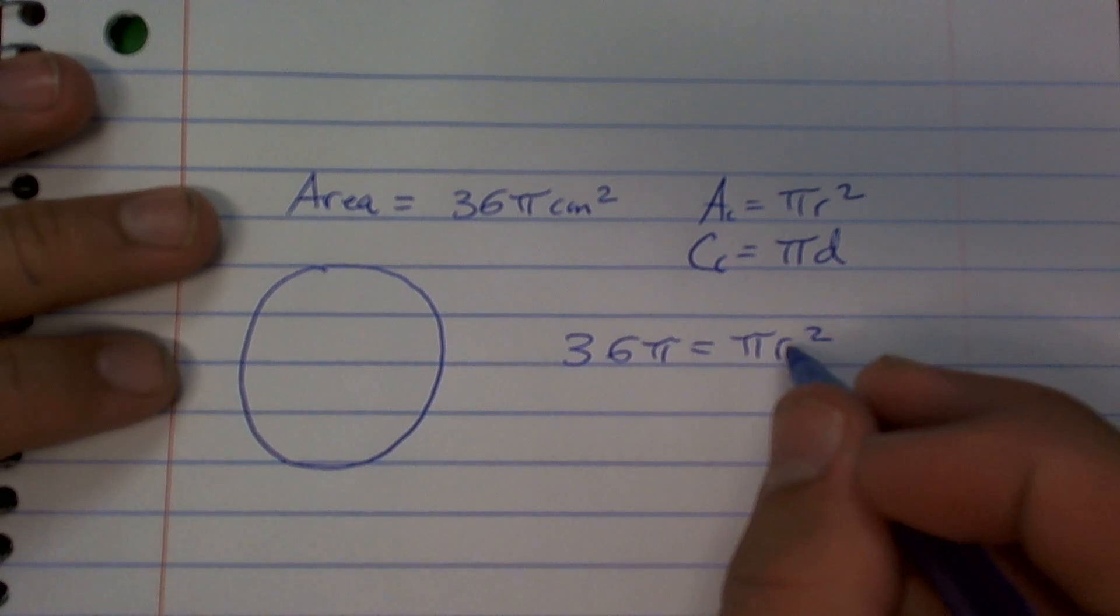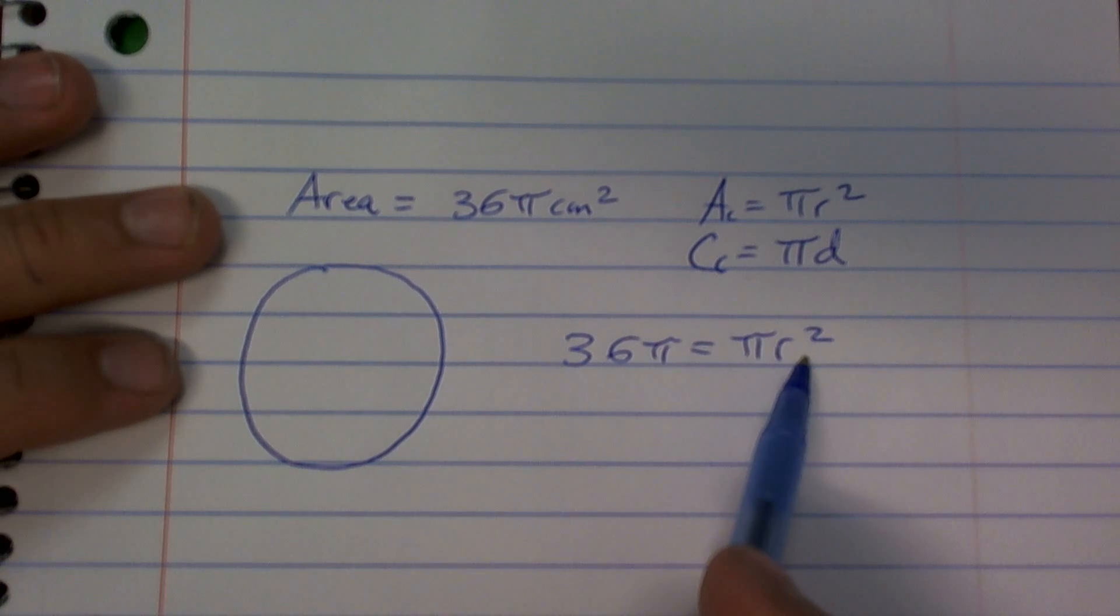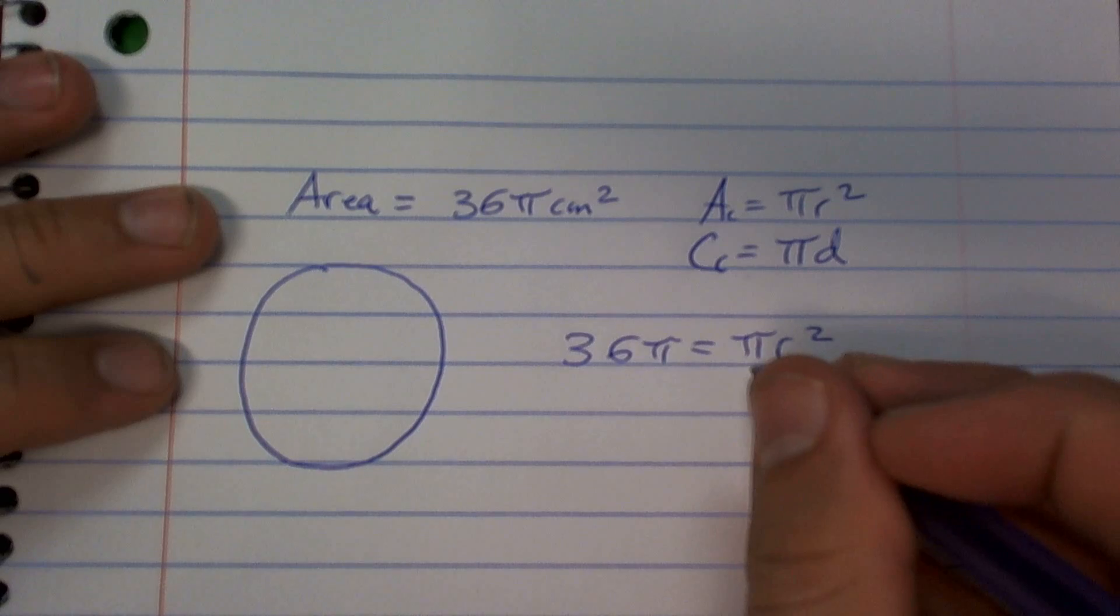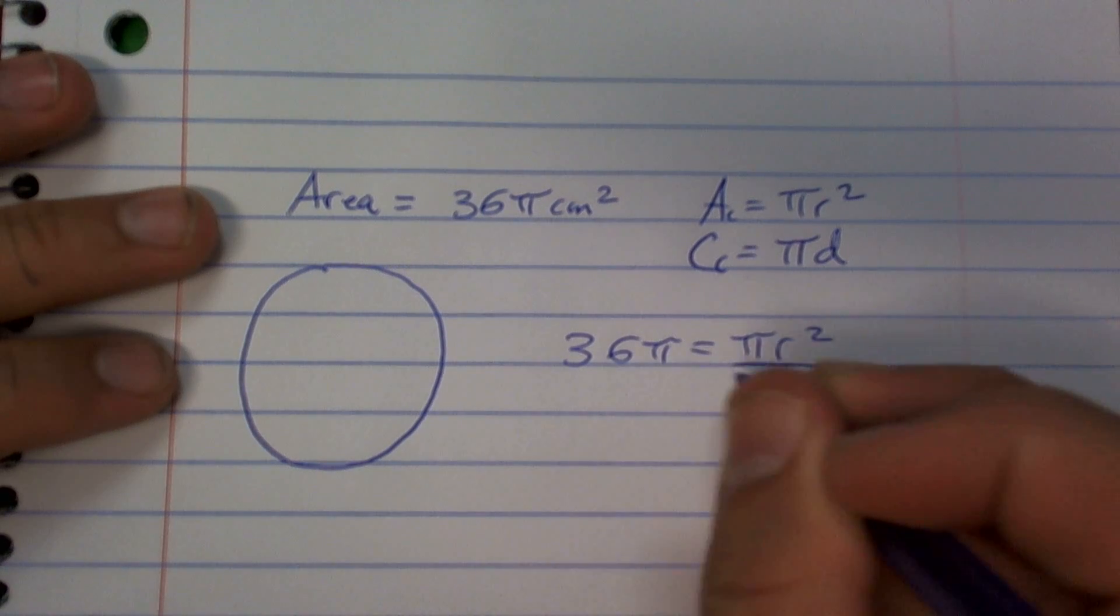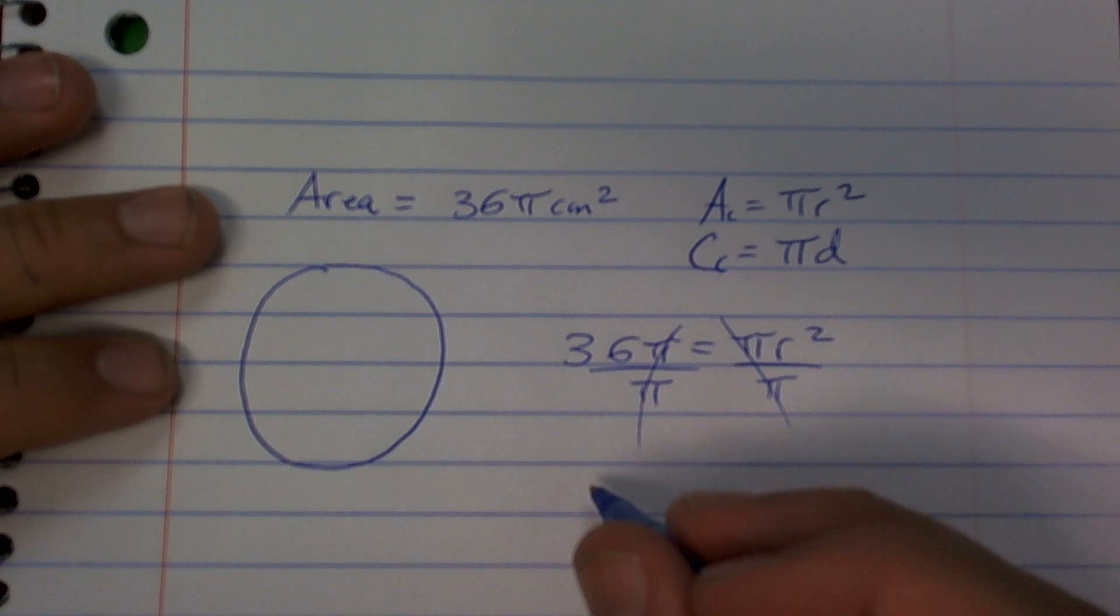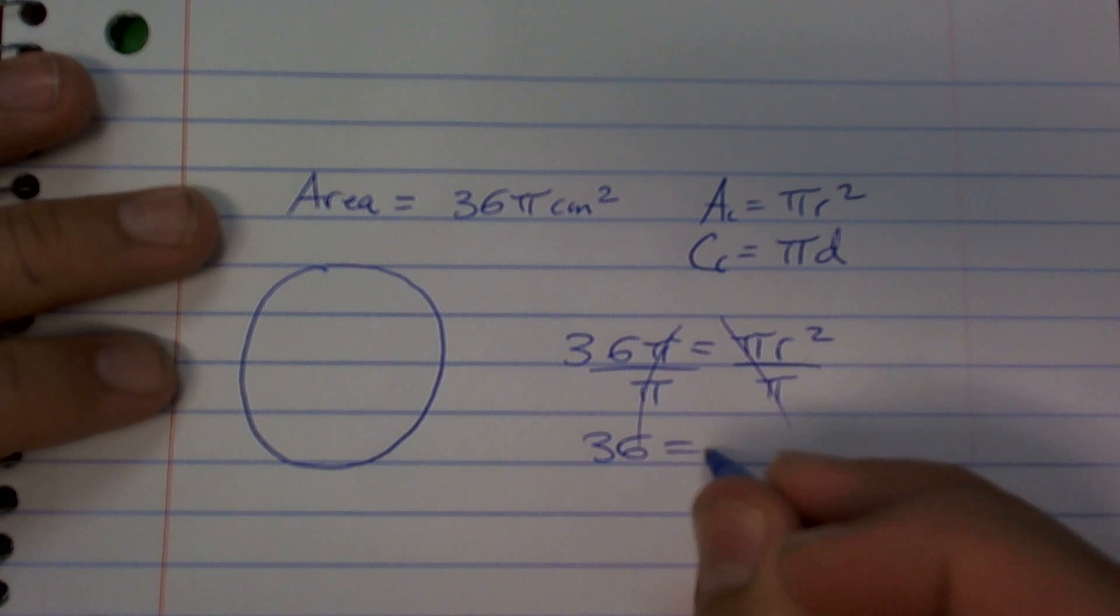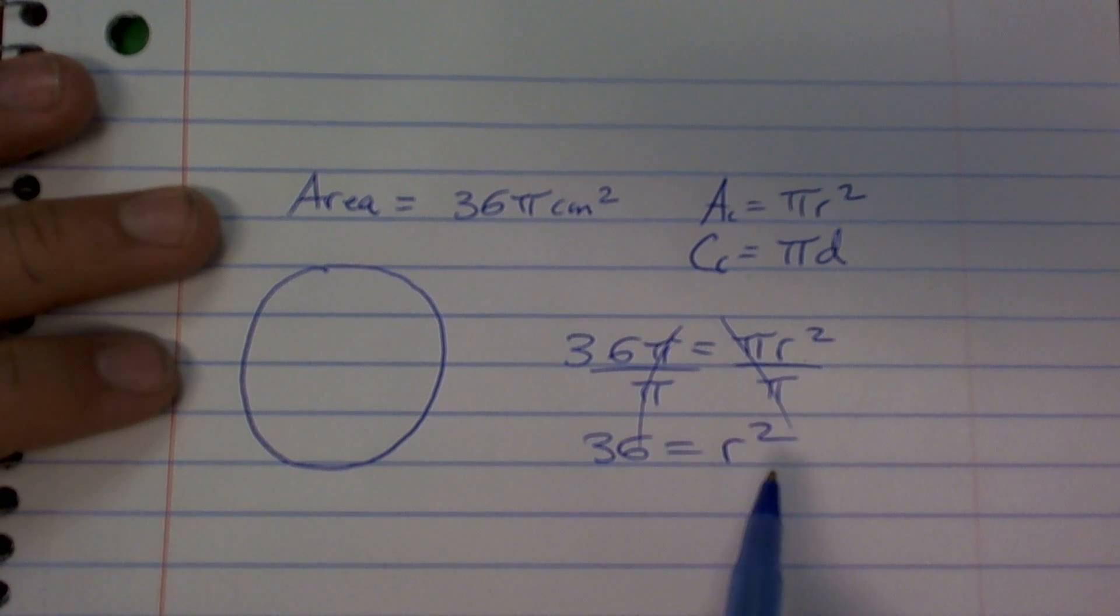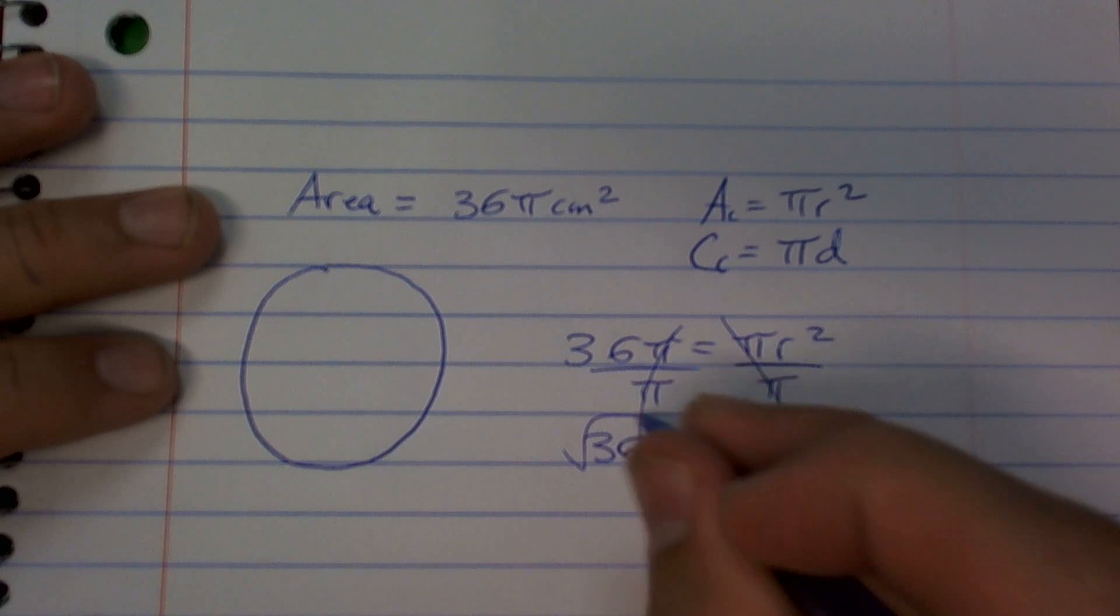So then I do not know what my r is. So what I can do is I can solve for r by dividing pi on both sides. Those cancel out. Those cancel out. So I'm left with 36 equals r squared, and then to solve for r, I've got to take the square root.